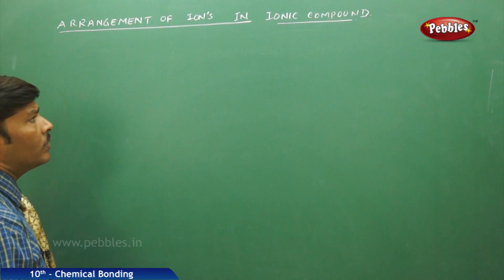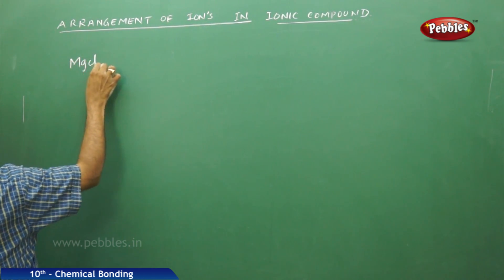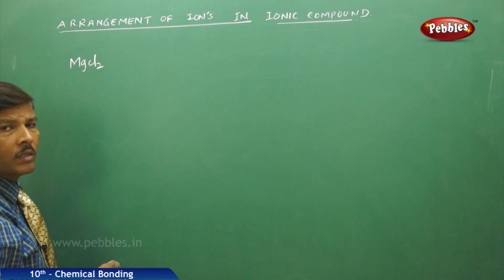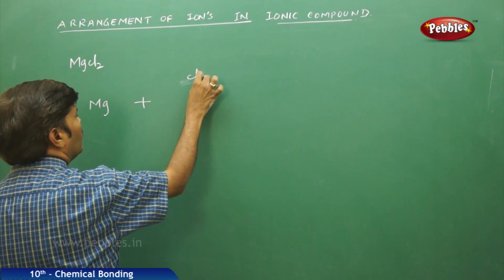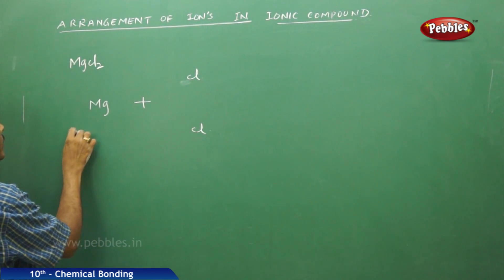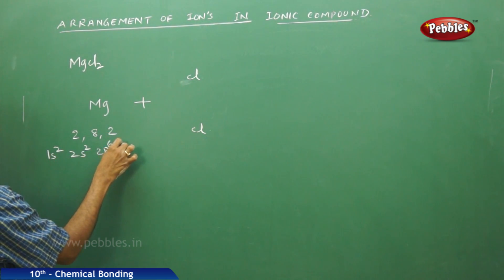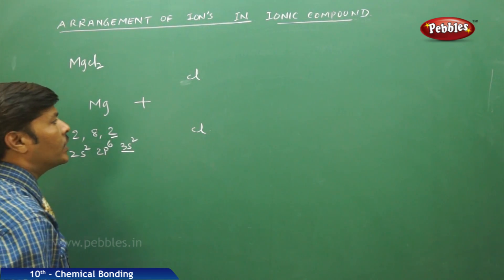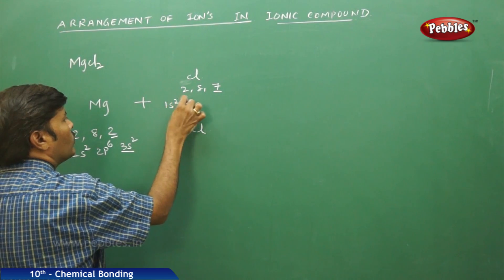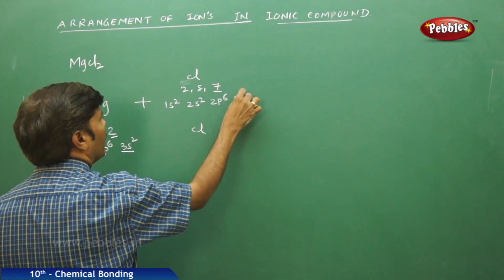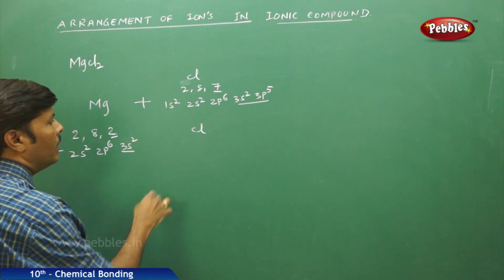Similarly, for the formation of ionic bond in magnesium chloride: there are three atoms available — one magnesium and two chlorine atoms. Magnesium has the electronic arrangement 2, 8, 2 — configuration 1s² 2s² 2p⁶ 3s². These are the valence electrons of magnesium. Each chlorine has the arrangement 2, 8, 7 — configuration 1s² 2s² 2p⁶ 3s² 3p⁵, so seven valence electrons each.